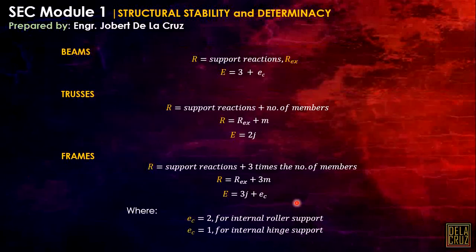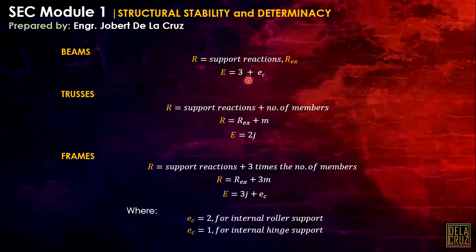For beams, we simplify so that R is just the support reactions, denoted R sub EX. Our E equals 3 plus E sub C, where 3 signifies the equations of equilibrium — summation of forces X, forces Y, and summation of moment — plus E sub C, which represents internal support reactions.